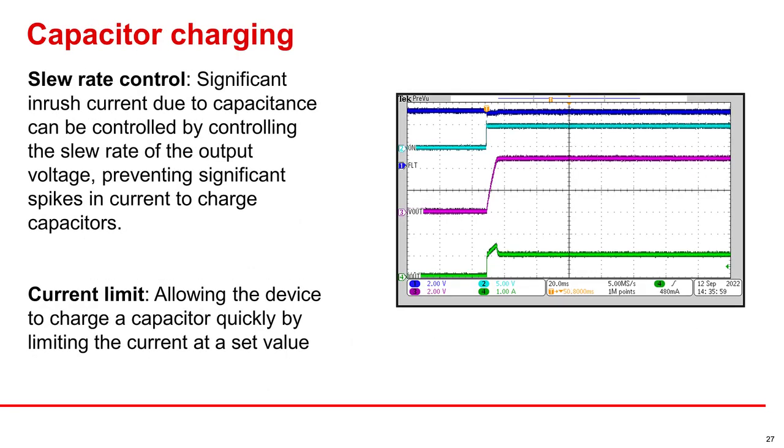There are two ways to charge capacitance on your load using load switches, through slew rate control and current limit. By limiting the slew rate on the output of your load switch, it can allow you to slowly charge your output capacitance, which mitigates the inrush current. You can also handle inrush current in the case where a device with under voltage lockout is downstream and enables when the load switch is already on.